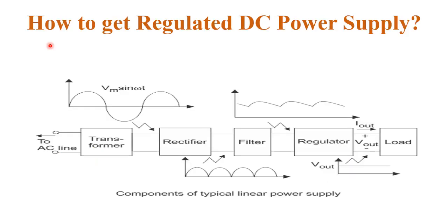To get a regulated DC power supply, only a rectifier is not sufficient. We require a number of components to convert AC input into regulated DC output. Those components are: the transformer, rectifier, filter, and regulator. These are the components that convert AC into regulated DC.